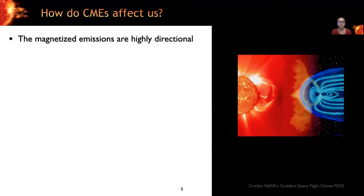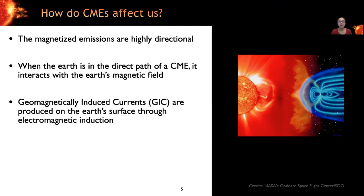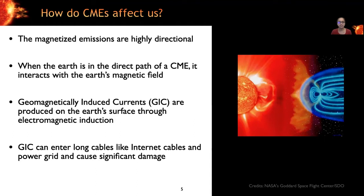How exactly do CMEs affect us? The magnetized emissions are highly directional. And when the Earth is in the direct path of a CME, it interacts with the Earth's magnetic field and produces geomagnetically induced currents on the Earth's surface through electromagnetic induction. Fortunately, humans are protected from direct impact by the Earth's magnetic field and atmosphere. But this GIC can enter long cables and cause significant damages particularly to long distance internet cables as well as long distance power transmission lines. And cable repair, especially for submarine cables in the ocean, can be very expensive and time consuming.